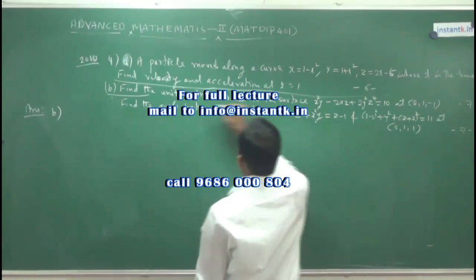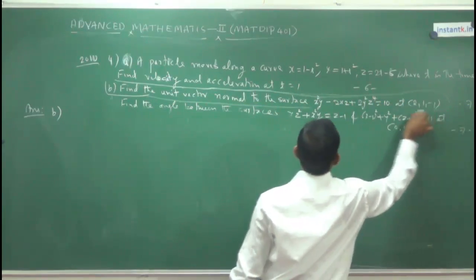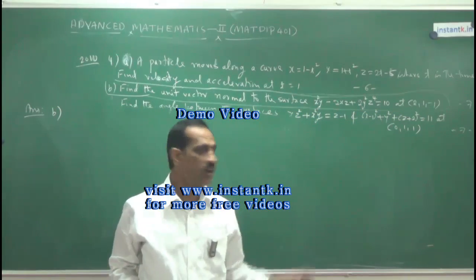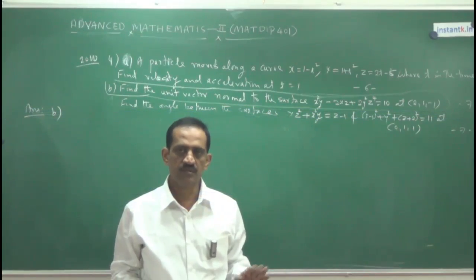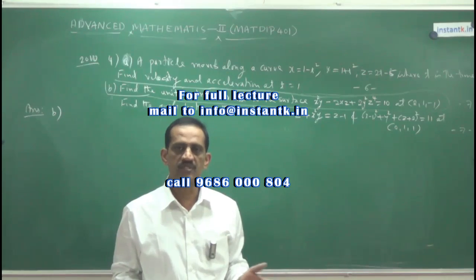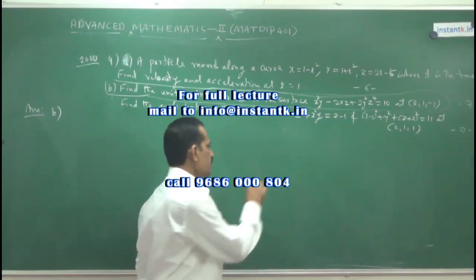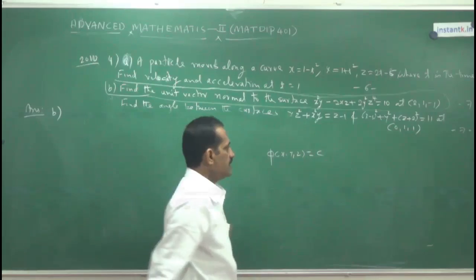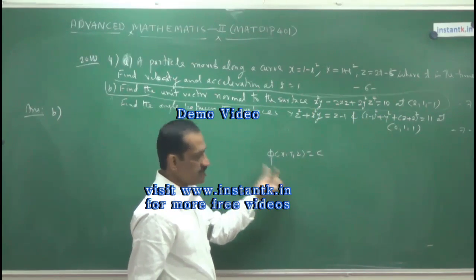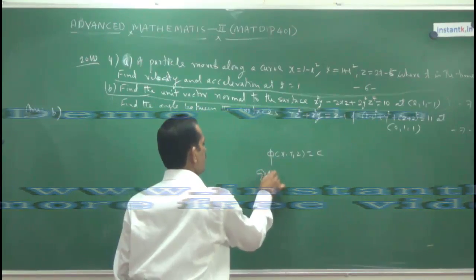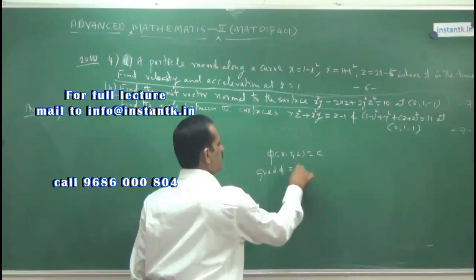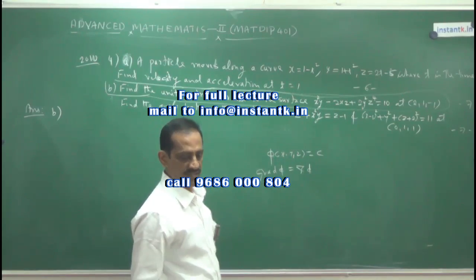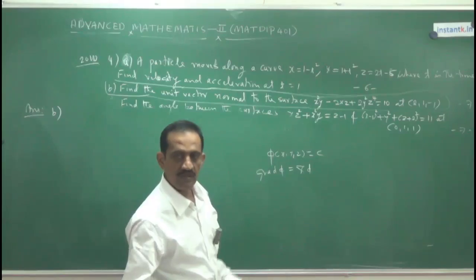Before finding the unit normal, we must find the normal to the given surface. We have defined the gradient of a scalar point function. If phi(x, y, z) = c is the equation of a surface, the normal to the surface is nothing but the gradient of the scalar point function, that is grad phi, also written as del phi. So first find del phi for this function.